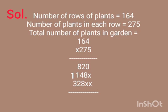Again we will put 2 crosses under 0. 2 fours are 8. 2 sixes are 12, carry 1. 2 ones are 2 plus 1 is 3.